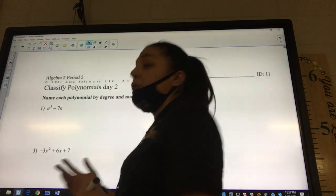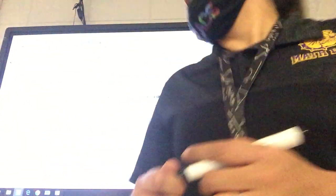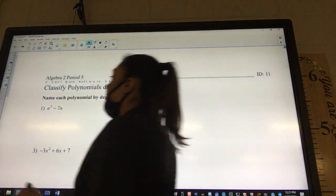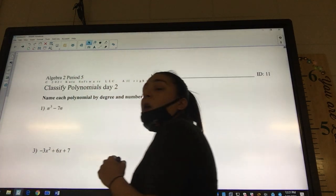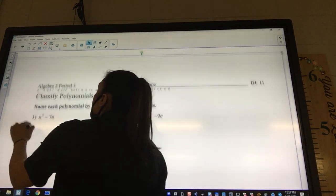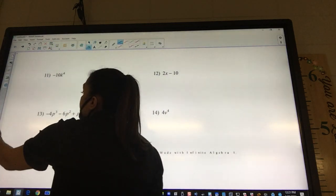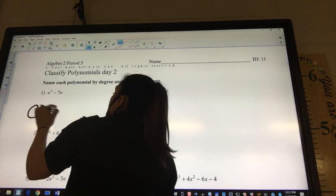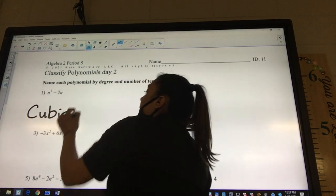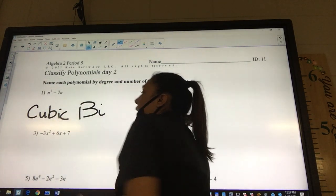All right, so classifying polynomials. Most of you guys should have got this by today. Hey, what's the highest exponent? Three. The highest exponent is three, so it's going to be a what? A cubic. Cubic, and then how many pieces? Binomial. Binomial.